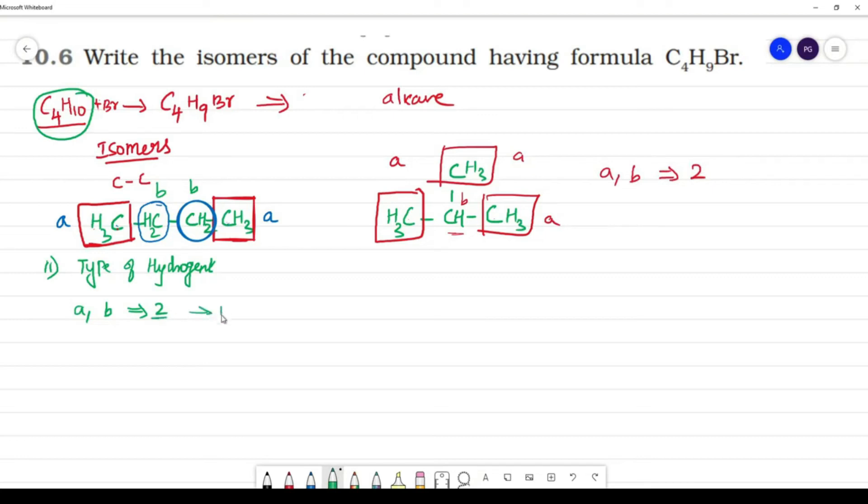Now you will be getting two isomers. A type of hydrogen, one H replace BR. CH2 H replace BR, CH2 CH2 CH3. So this is one isomer.